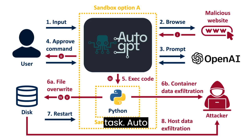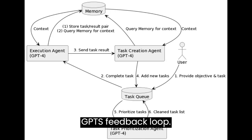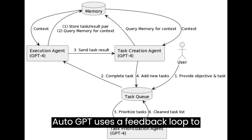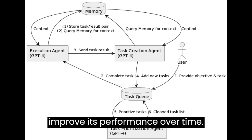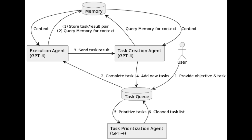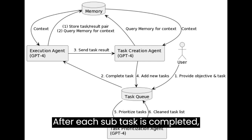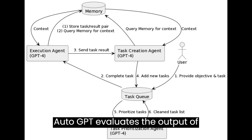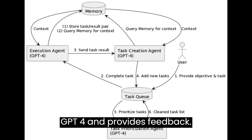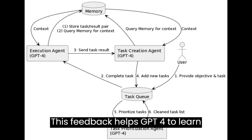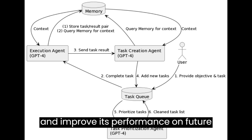Auto-GPT uses a feedback loop to improve its performance over time. After each subtask is completed, Auto-GPT evaluates the output of GPT-4 and provides feedback. This feedback helps GPT-4 to learn and improve its performance on future tasks.